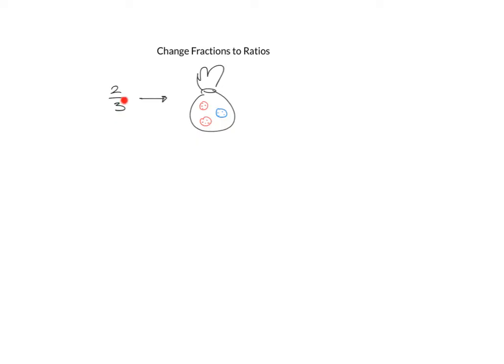So this two-thirds basically tells me that two-thirds of the buttons in this bag are red. You can see I've got three buttons together, two of them are red, so it means two-thirds of the buttons are red.